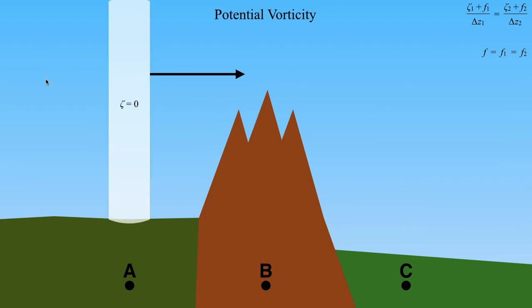If we take a column of air, just for simplicity we'll assume it has a relative vorticity of zero — it's not rotating at all. We're going to move this column of air over the Rockies, where the depth of this column is going to decrease. As an exercise, I'll ask you to pause the video and try to work out, using this conservation principle, what's going to happen to our relative vorticity zeta as this column from point A goes over point B and the column depth decreases.